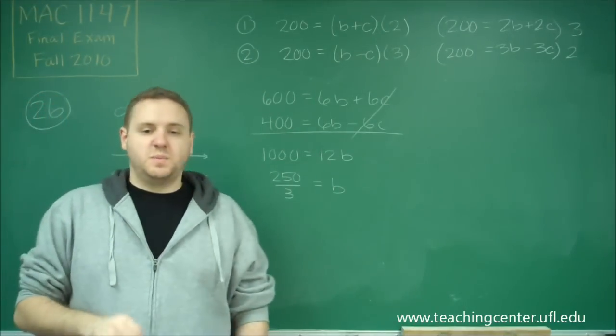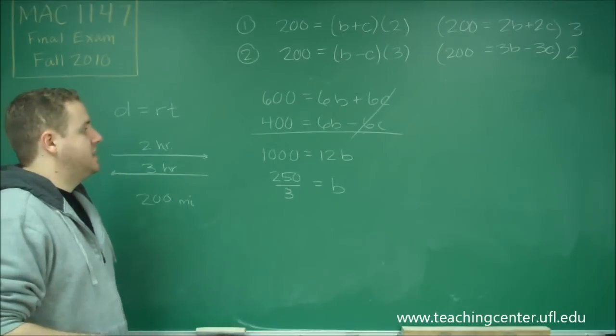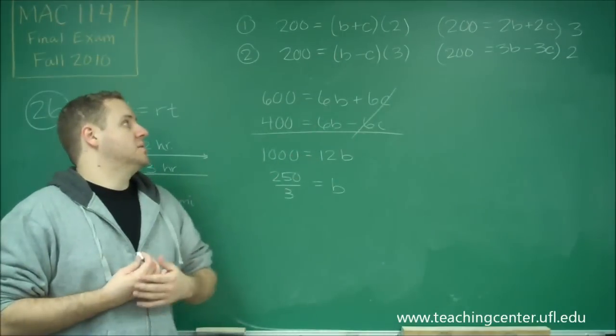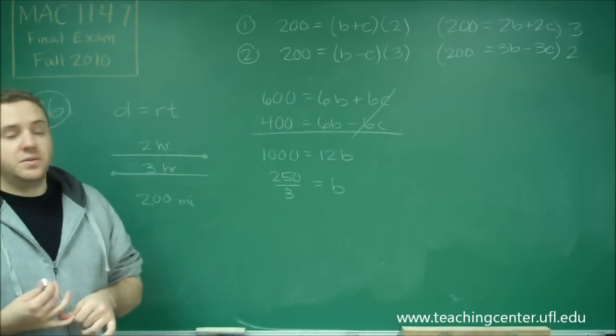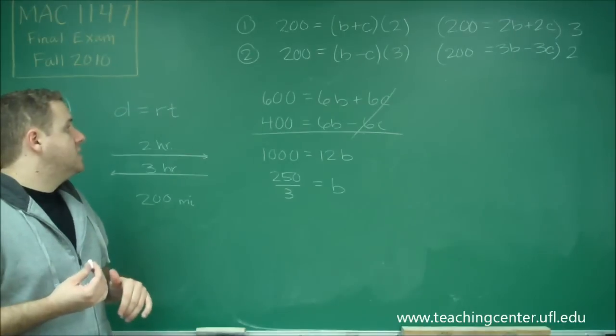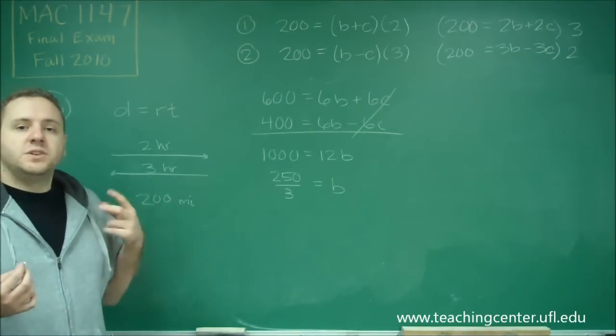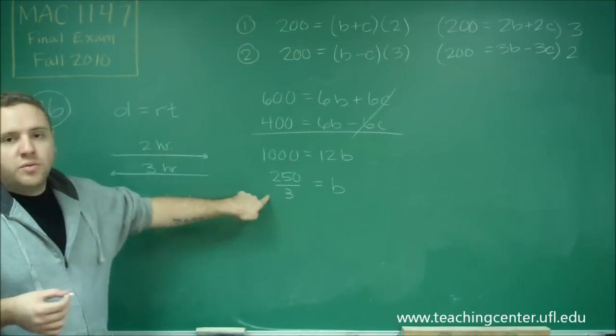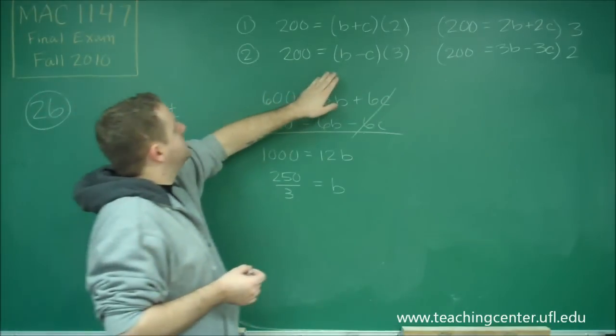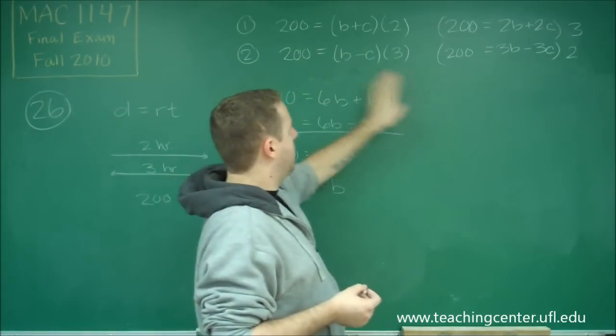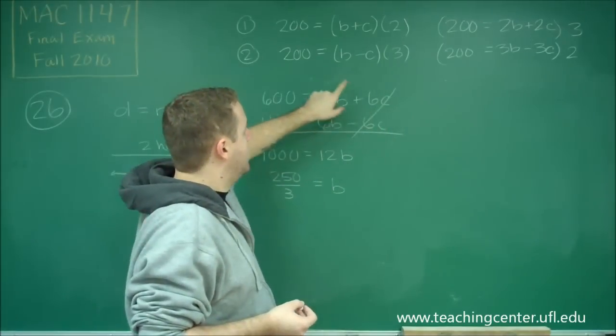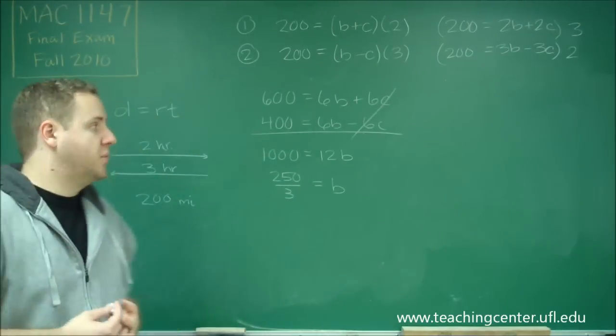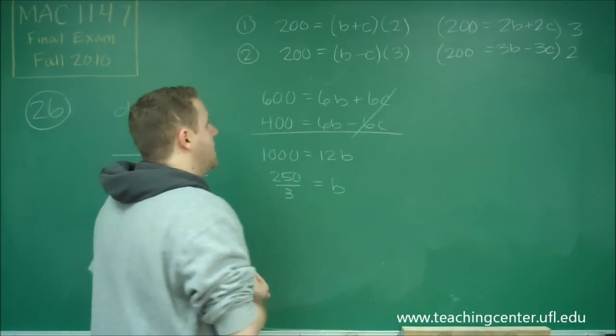Now the question asks us for the speed of the current, so we need to find C. But once we have B, we can easily figure out C by plugging in to either of the other equations. So just to make life a little bit easier, and this is a good tip you can use here, our B is something that's over 3. So we might as well plug into this equation, because we're going to be multiplying that by 3, so that will get rid of the denominator for us.